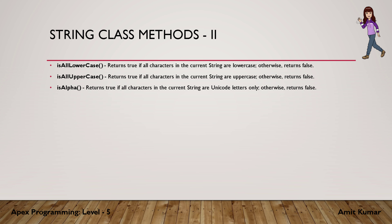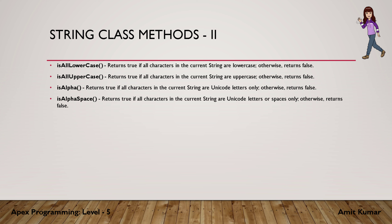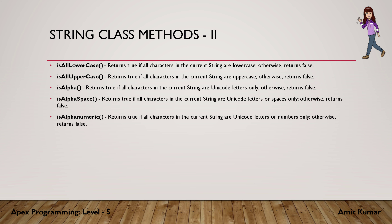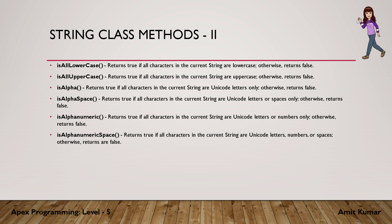isAlpha returns true if all characters in the string are letters only. isAlphaSpace returns true if all the characters in the current string are letters or spaces. isAlphanumeric returns true if all the characters in the current string are numbers or alphabets. isAlphanumericSpace returns true if all the characters are letters or numbers or spaces.